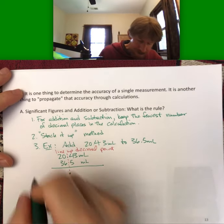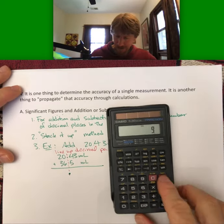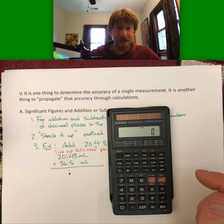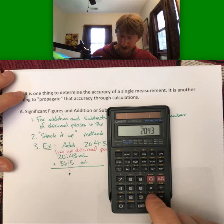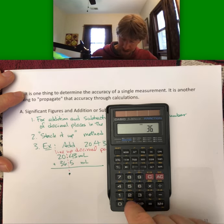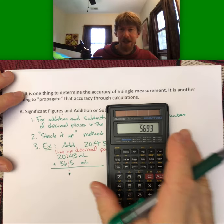Now I still use a calculator to do it, because you'll always have a calculator. 20.43 plus 36.5, I get 56.93.